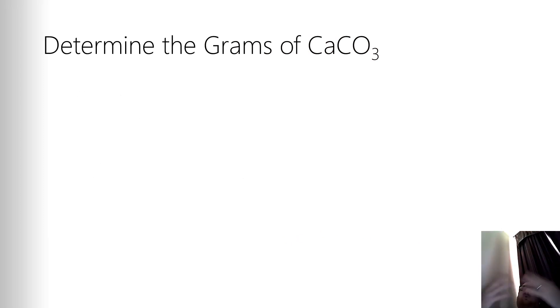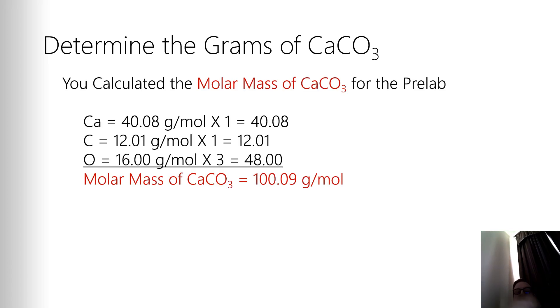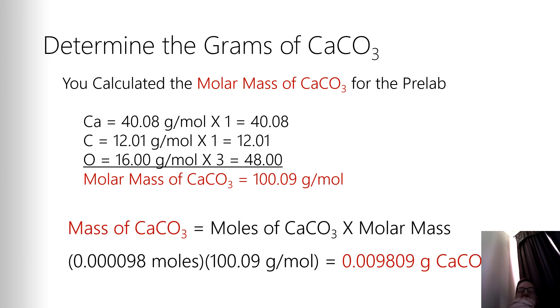The next step is to convert that to how many grams of calcium carbonate that represents. Well, this is a pretty straightforward molar mass calculation. In the pre-lab, you calculated the molar mass of calcium carbonate to be 100.09 grams per mole. Using that and the number of moles I just calculated in the previous slide, I can determine the mass of calcium carbonate. The mass of calcium carbonate is going to be equal to the moles of calcium carbonate times the molar mass. So I have my moles, 0.000098 moles, times my molar mass, 100.09 grams per mole. Moles cancel and end up with 0.009809 grams of calcium carbonate.